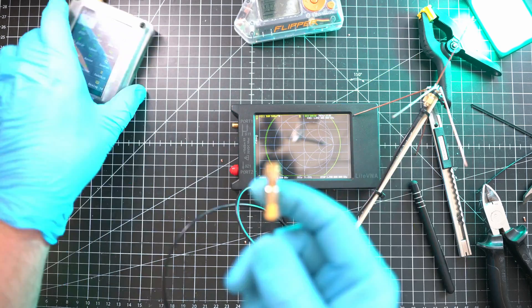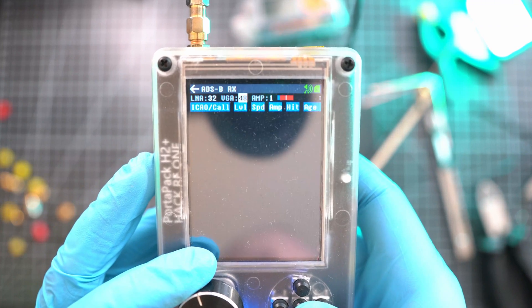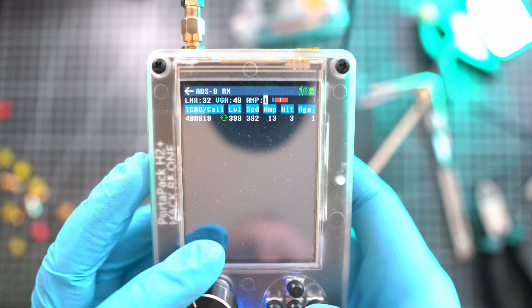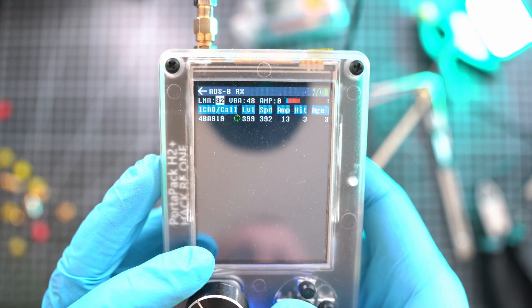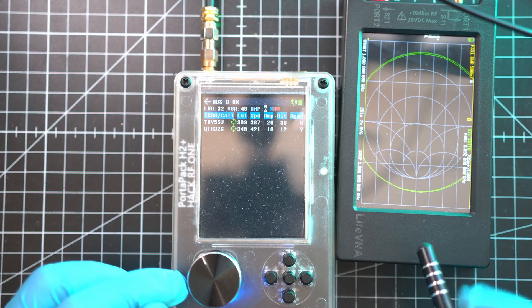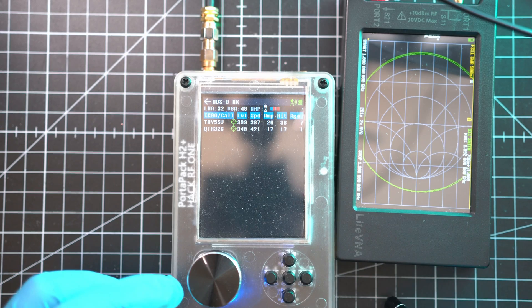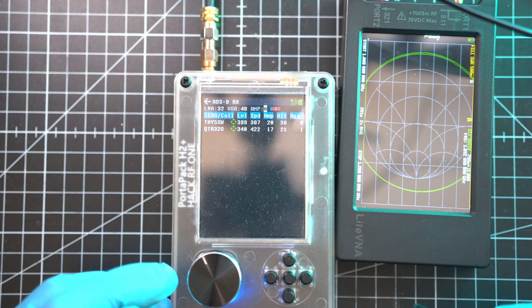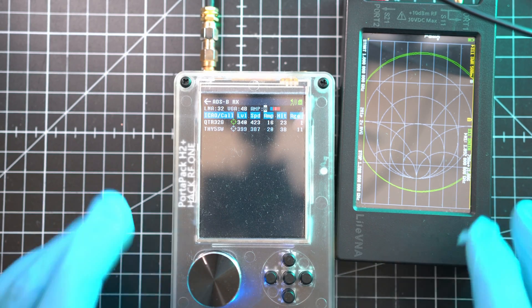And the moment we all waited for is here. Hecar F1 Portapack H2 Plus paired with the cheapest ADS-B antenna. Zero amps, we got a couple of hits. Please note we are indoors and the weather is shit. It's foggy outside. I am happy and ready for the next DIY antenna build. Thanks for watching and see you next time.